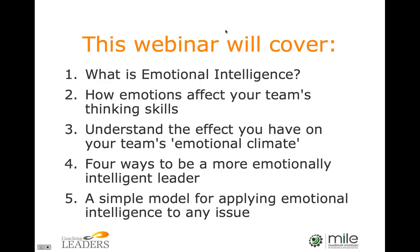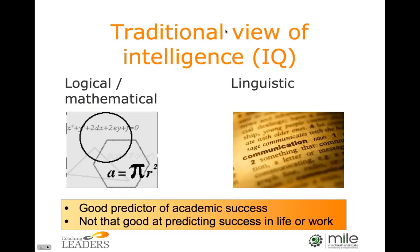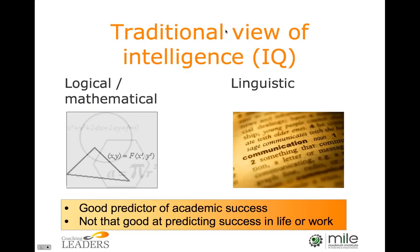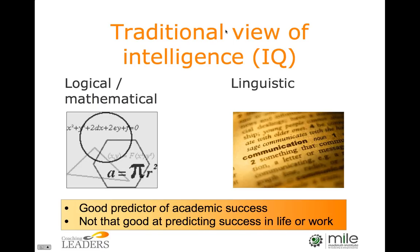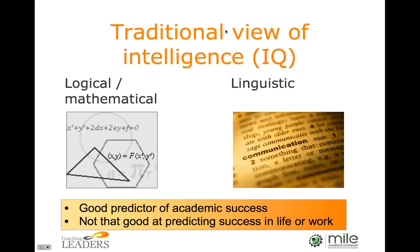First of all, what is emotional intelligence? Let's contrast it with the traditional narrower view of intelligence — the intelligence quotient, or IQ. IQ measures two kinds of intelligence: logical or mathematical intelligence, which is about pattern detection, drawing logical conclusions, and being good with numbers; and linguistic intelligence, which is being good with language.